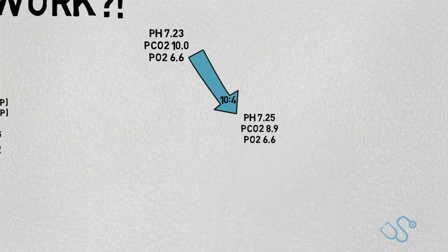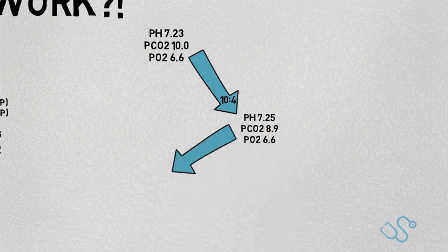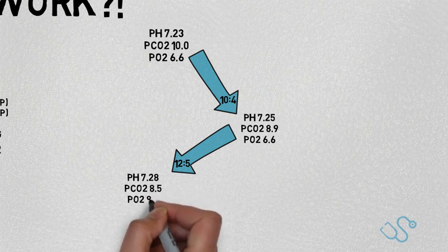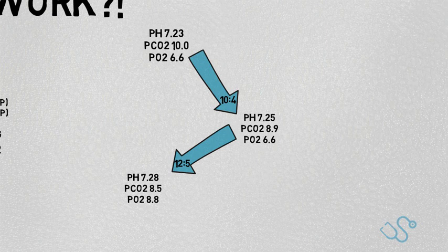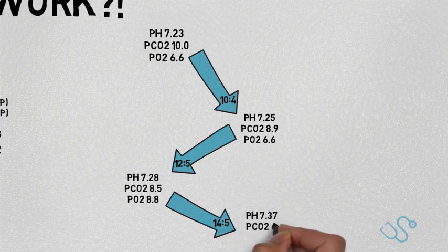The patient is still acidotic, still hypercapnic, and still hypoxic, so we increase IPAP to 12 and EPAP to 5. An hour later, the gas shows a pH of 7.28, PCO2 of 8.5, and PO2 of 8.8. All things considered, he is improving but not well enough. The oxygen is now pretty good, so we only need to tinker with the CO2 and the IPAP. Our new settings will be IPAP 14 and EPAP 5. An hour later, we repeat the gas: pH of 7.37, PCO2 of 6.6, and PO2 of 8.9. Congratulations — you've fixed the patient.